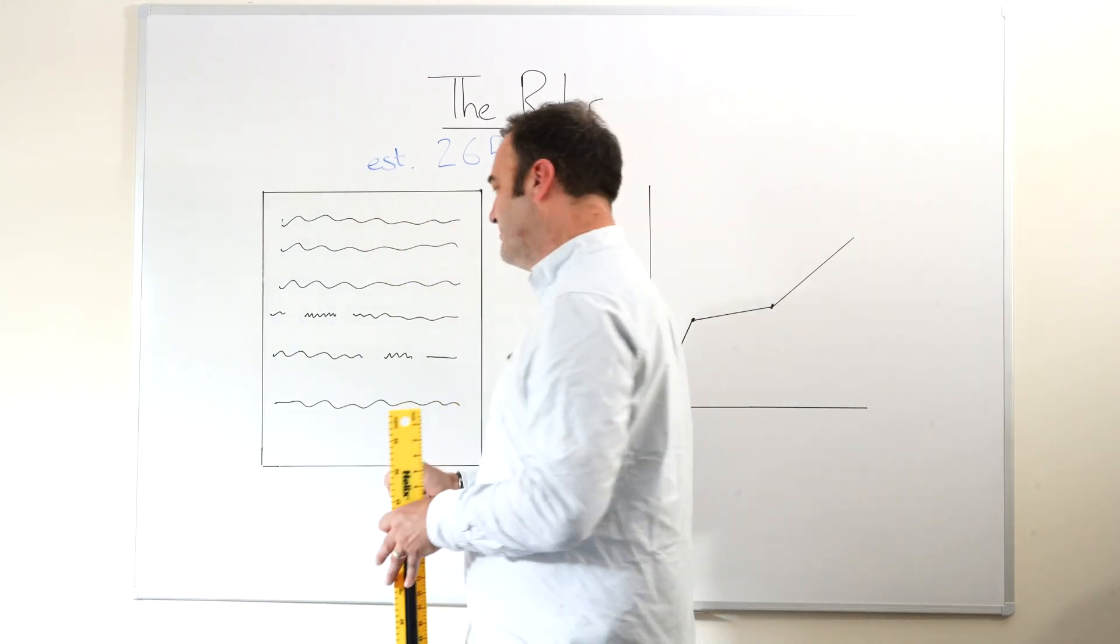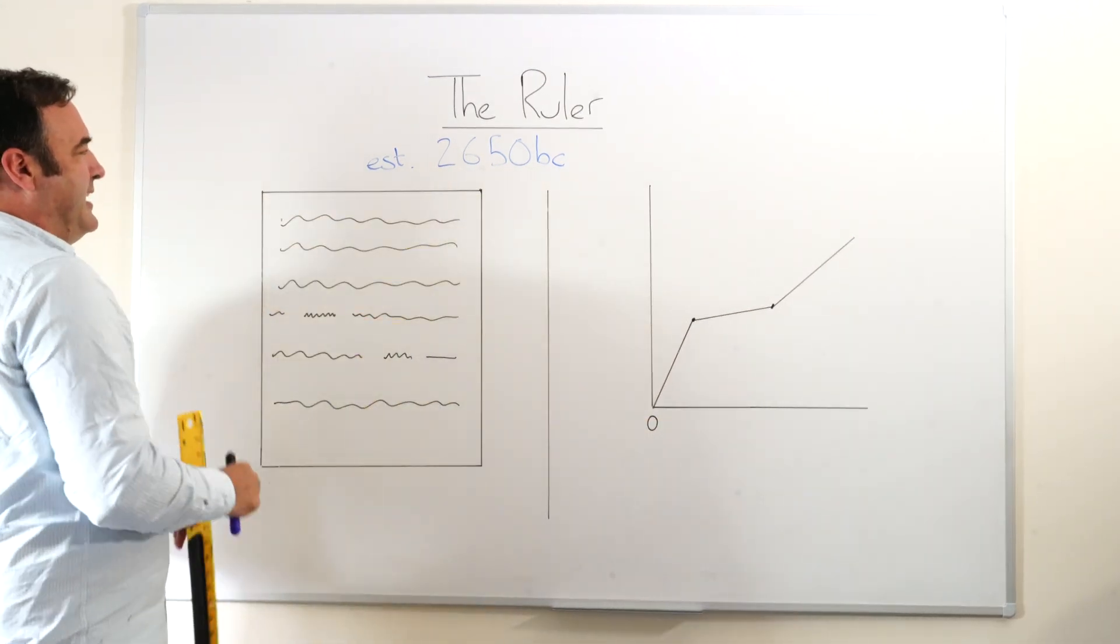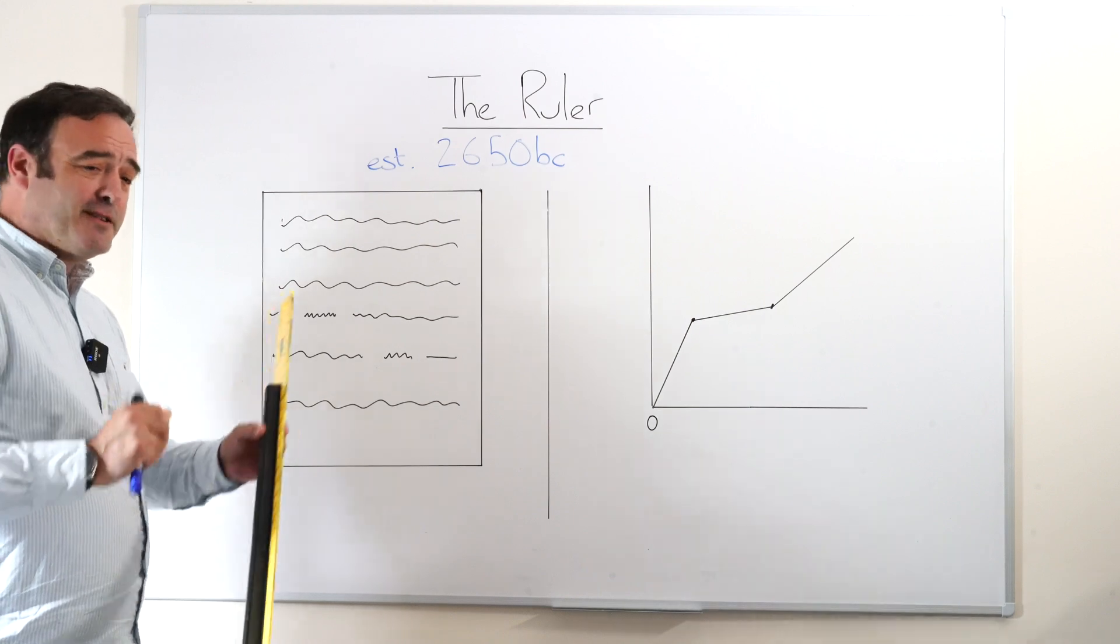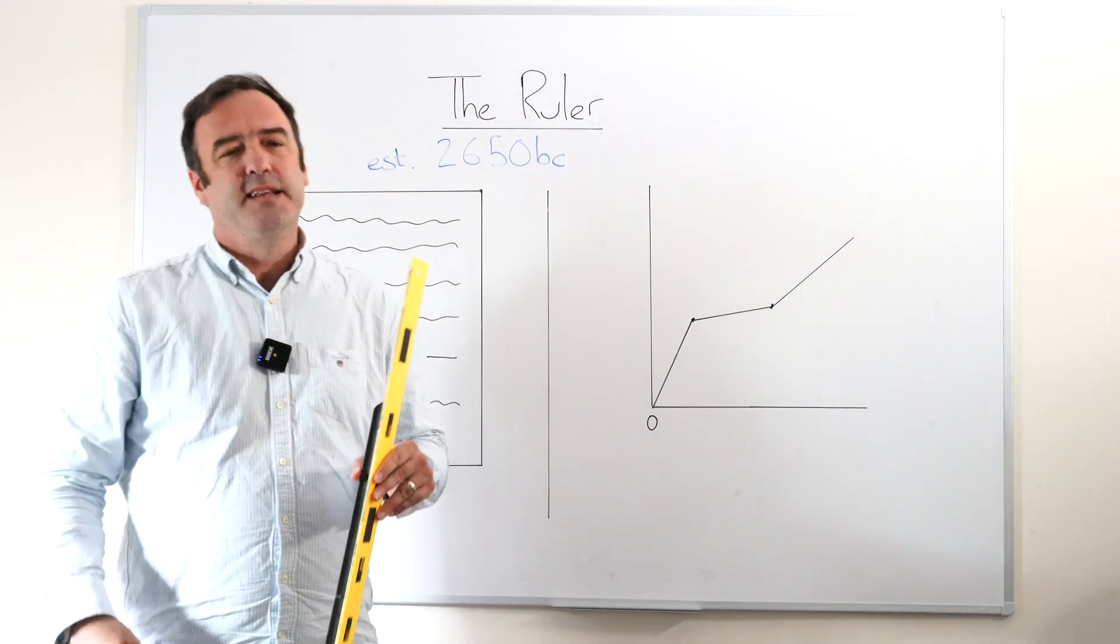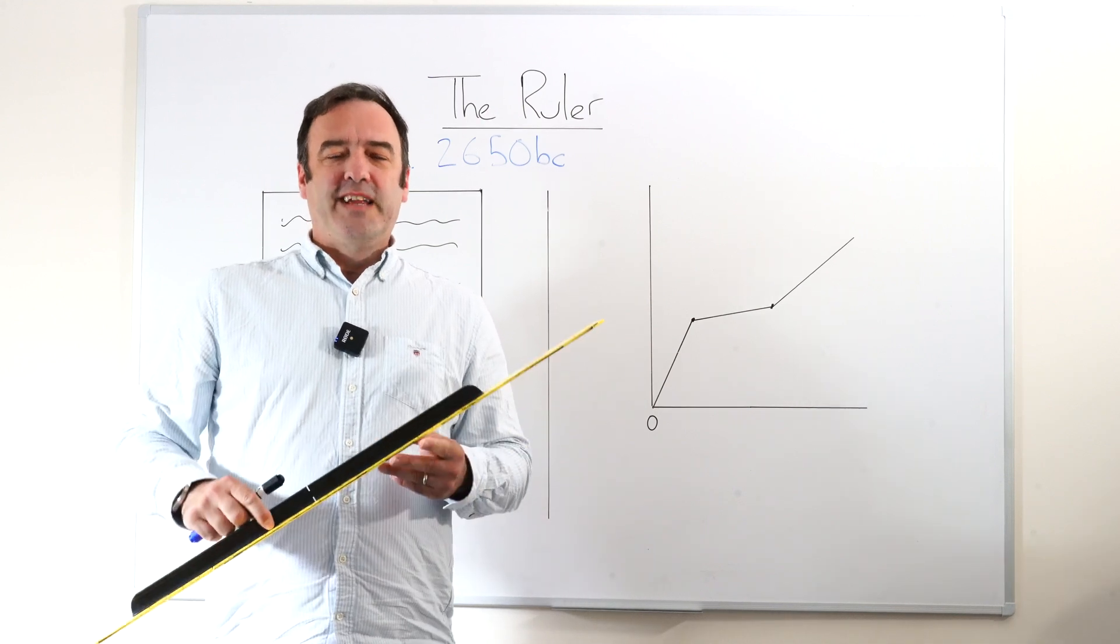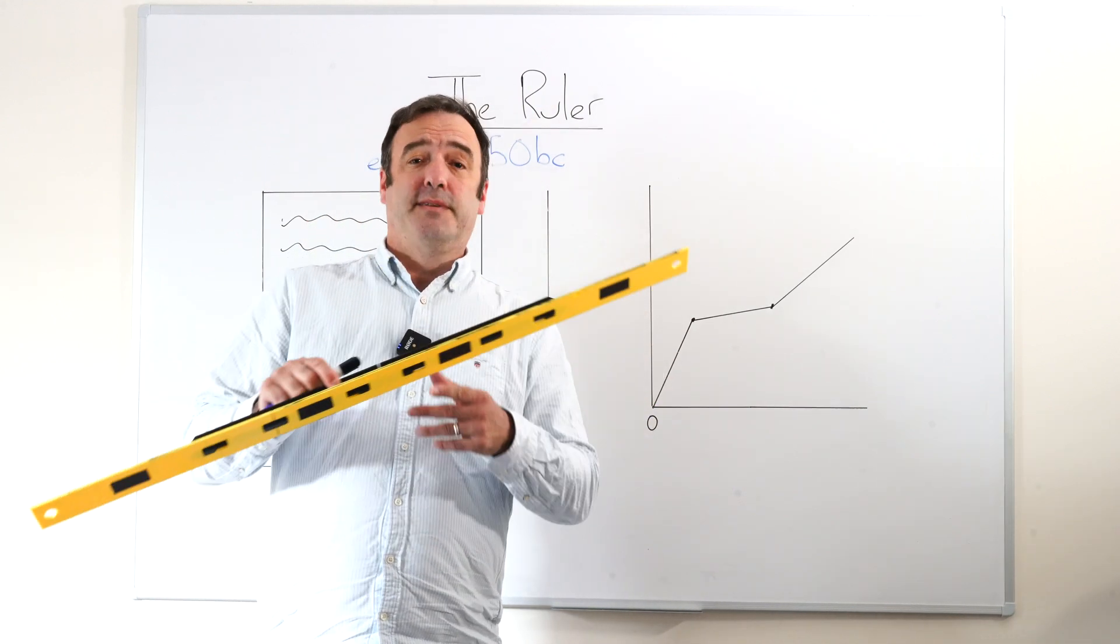So this can make all of the difference in the 11 plus exam in terms of finding evidence. You know, it's amazing when we go through answers, the number of kids that can plainly see what the evidence is and what the answer should be. And if only they'd used something like a ruler to locate that evidence, they just missed it.